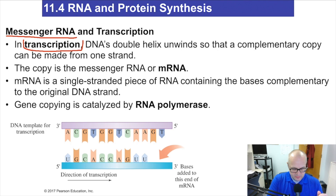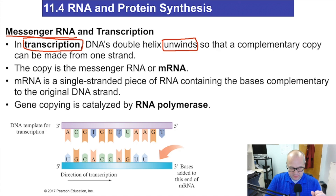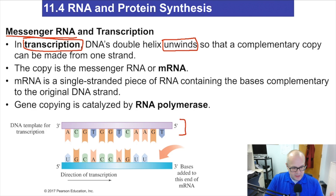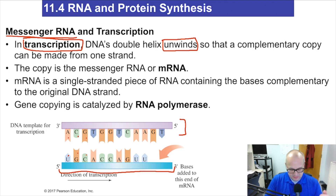In the process called transcription, DNA's double helix will unwind so that a complementary copy can be made from one strand. Basically, we're going to make a strand of RNA that is the complementary version of the DNA. Here's our DNA strand and here's the RNA being made at the bottom — complementary to the top: adenine interacts with uracil, cytosine with guanine, and so on.